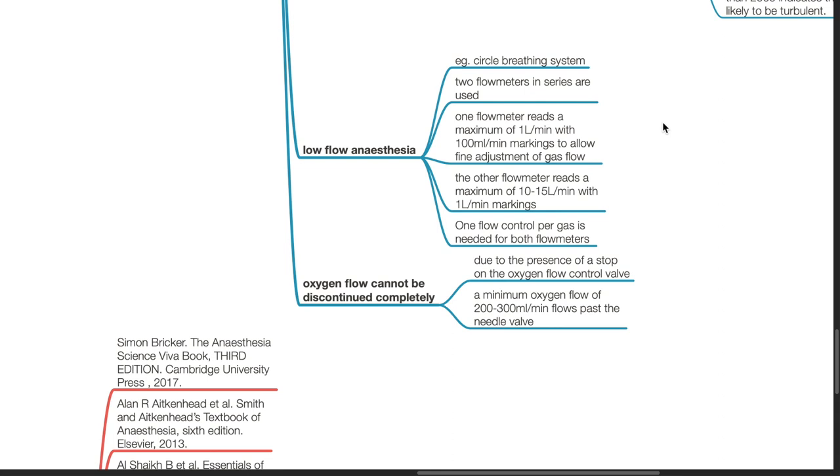One flow control per gas is needed for both flow meters. Oxygen flow cannot be discontinued completely due to the presence of a stock on the oxygen flow control valve. A minimum oxygen flow of 200 to 300 mls per minute flows past the needle valve.